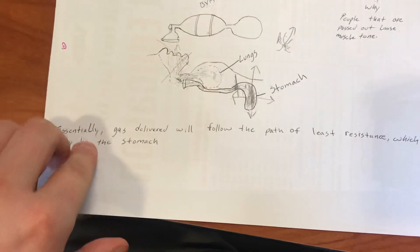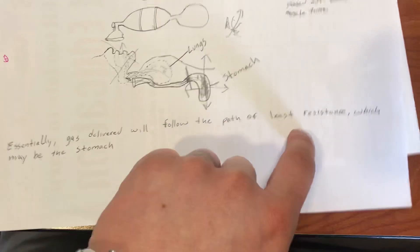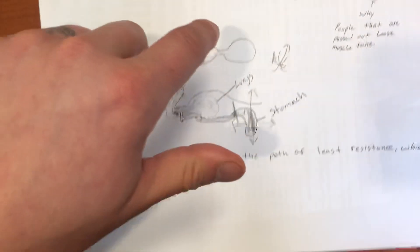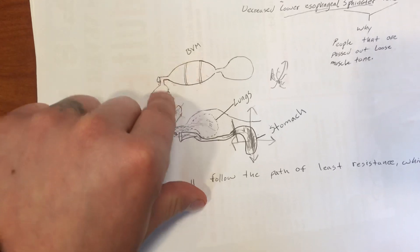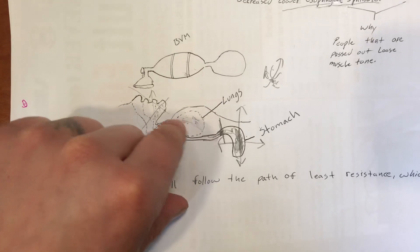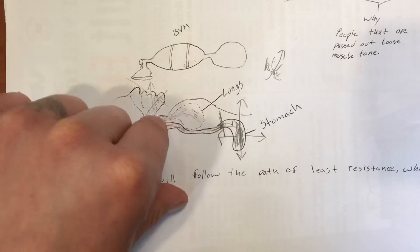Essentially, gas delivered will follow the path of least resistance, which may be the stomach. Again, if you're pushing air into the patient's system, they're not breathing, so the lungs are not going to be compliant. You're forcing air in there.